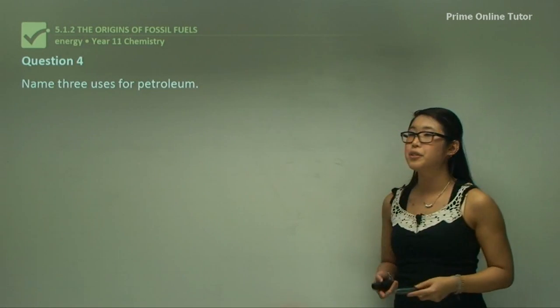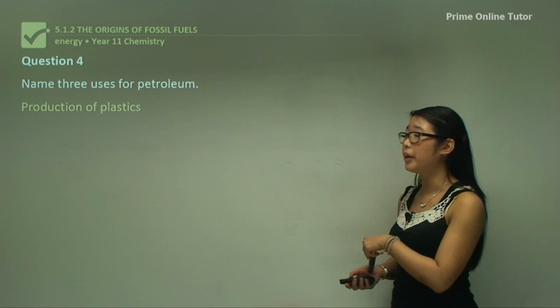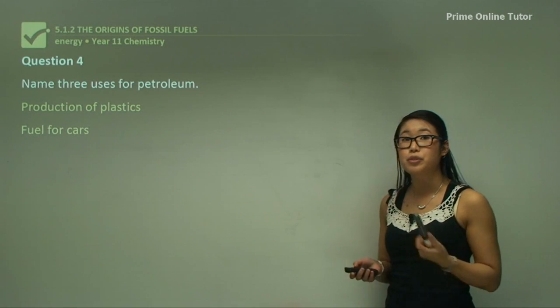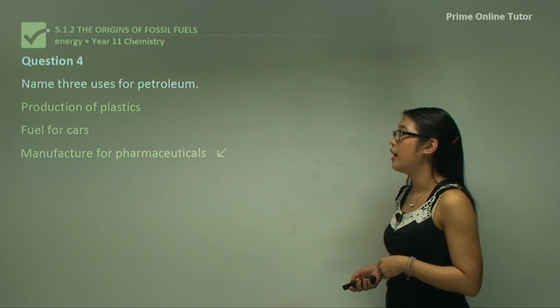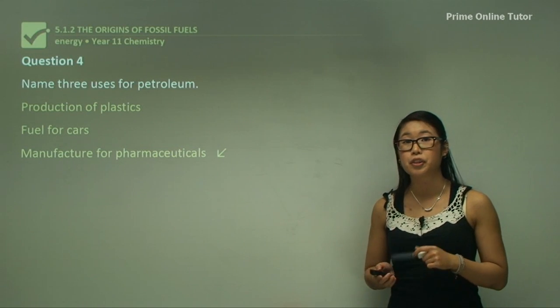Question four: name three uses of petroleum. One is in the production of plastics. We also can use it in fuel for cars as well as the manufacture of certain pharmaceuticals.